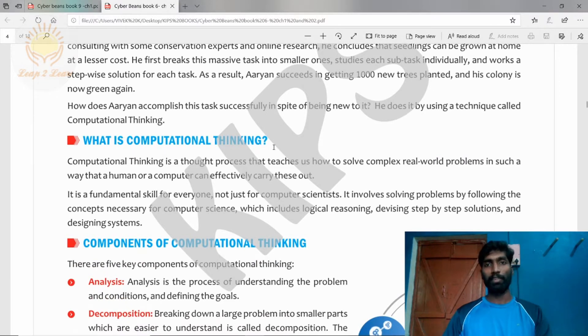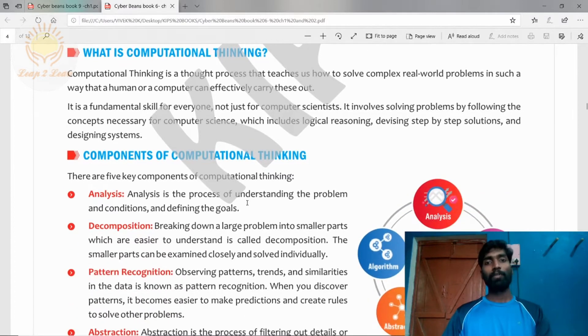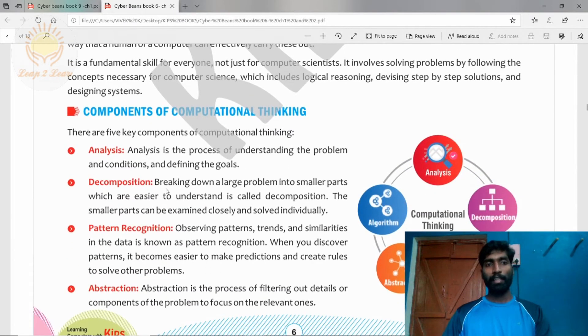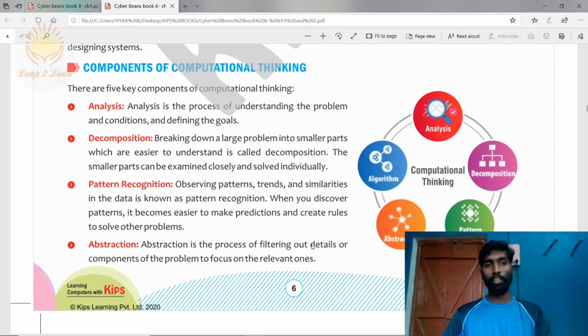It involves five main components namely analysis, decomposition, pattern recognition, abstraction, and algorithm. These are the five main components involved in computational thinking.